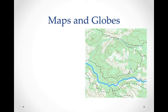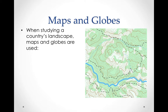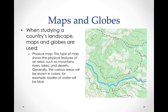We use maps and globes to measure the physical landscape of Europe. When studying a country's landscape, various types of maps and globes are used, which include physical maps. This is a type of map that shows the physical features such as rivers, lakes, and mountains, and uses various colors such as green for forests and blue for rivers.